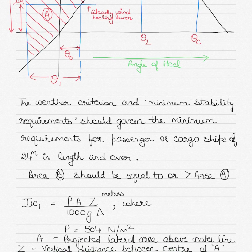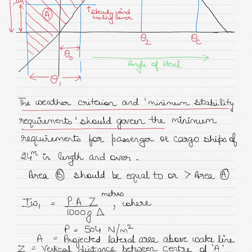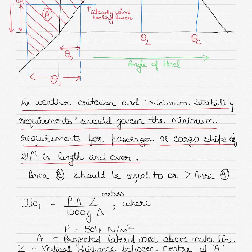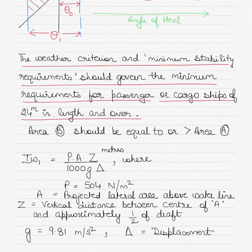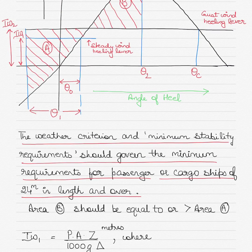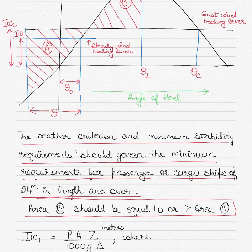The weather criterion and minimum stability requirements should govern the minimum requirements for passenger as well as cargo ships of 24 meters in length and over. In the above diagram, area B should be equal to or greater than area A. This is the most important bit of the diagram.